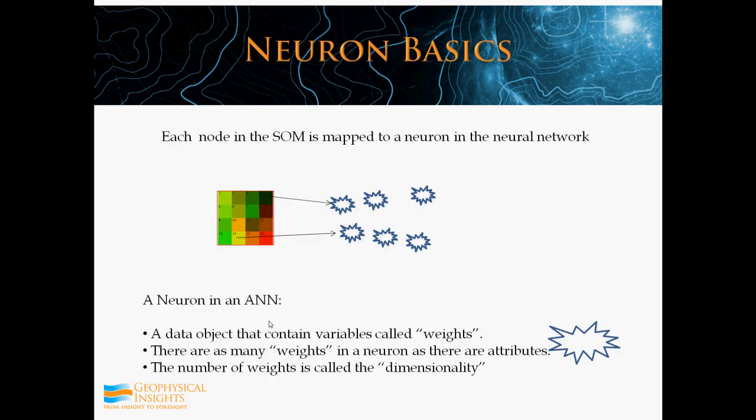Each node in the SOM is mapped to a neuron in the neural network. In fact, each square is just a representation of the node in the neural network — just another way of looking at it. A neuron in a neural network is a data object that contains variables called weights. There are as many weights in the neuron as there are attributes — in our case, two attributes: coherency and amplitude, now red and green. So we have a dimensionality of two.